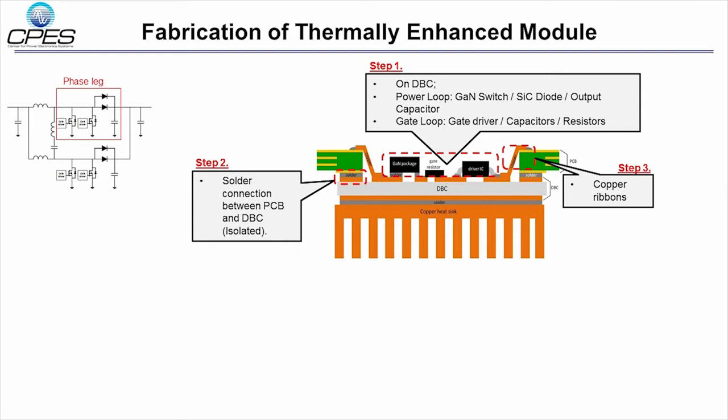Copper ribbons were used to make electrical connections between DBC and PCB. Heat sink was attached to the bottom copper of DBC by large solder joints, so the heat sink area could be maximized.